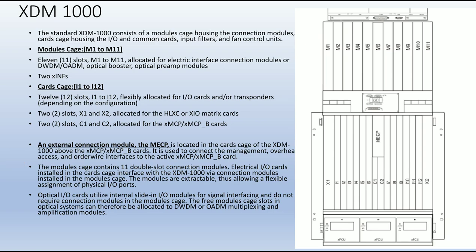The module cage contains 11 double-slot connection modules. Electrical input-output cards installed in the card cage interface with the XGM-100 via connection modules installed in the module cage. The modules are extractable, allowing flexible assignment of physical input-output ports. Optical input-output cards utilize internal slide-in input-output modules for signal interfacing and do not require a connection module in the module cage.